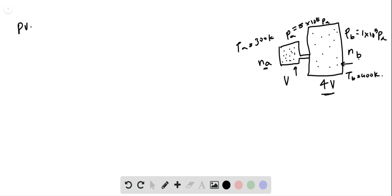Using PV equals NRT, we can see that NA is PV by RT. So that's PA VA by R TA. Similarly, NB is PB VB by R TB.